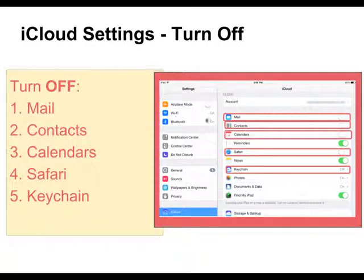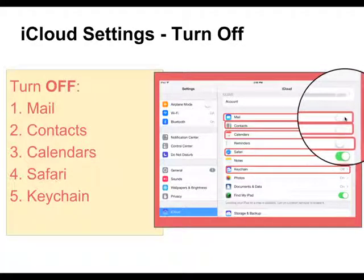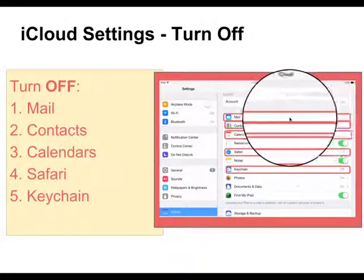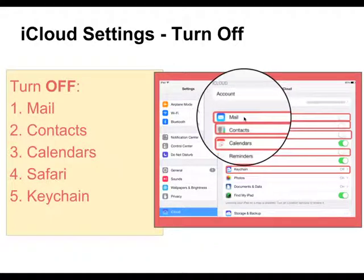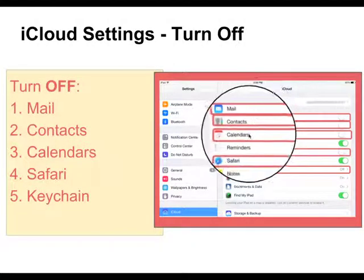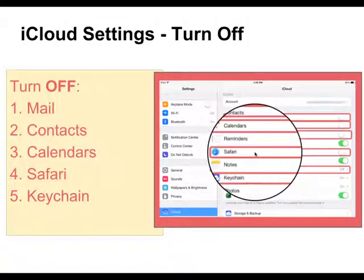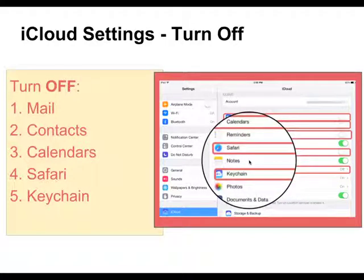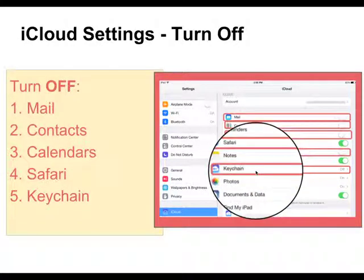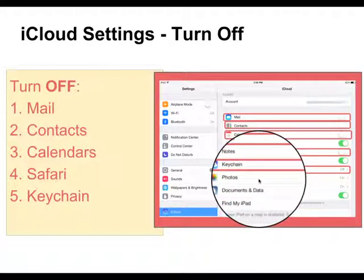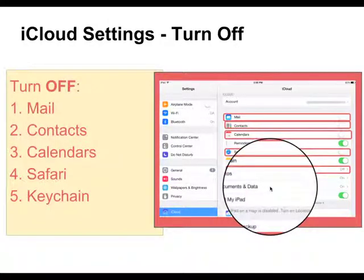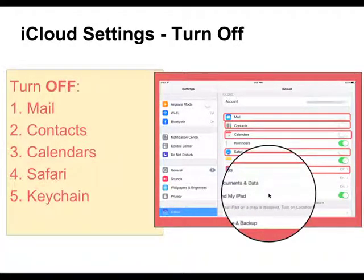While you're in iCloud, we want you to turn certain things off by moving the button so that green is not showing. Turn off Mail, Contacts, and Calendars. Leave Reminders on. Safari you can turn off so that it does not synchronize. Notes you can leave on. Keychain, we recommend you turn off. You can leave Photos on. Documents and Data will be on, and of course Find My iPad.